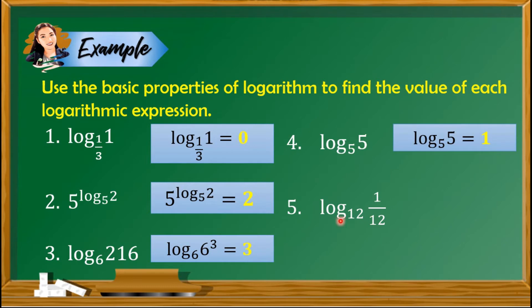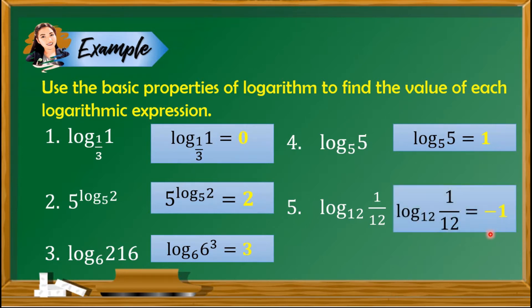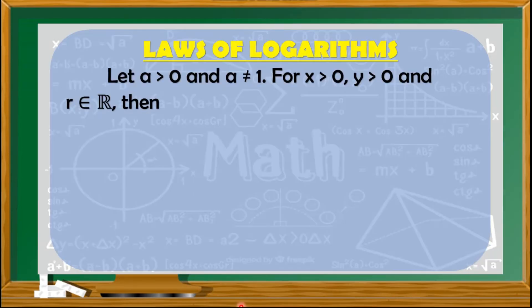Number 5, logarithm of 1 over 12 with base 12. As you can see, the base 12 is in the denominator of the fraction. If you have this, the answer is negative 1. Next, let us have the laws of logarithms.